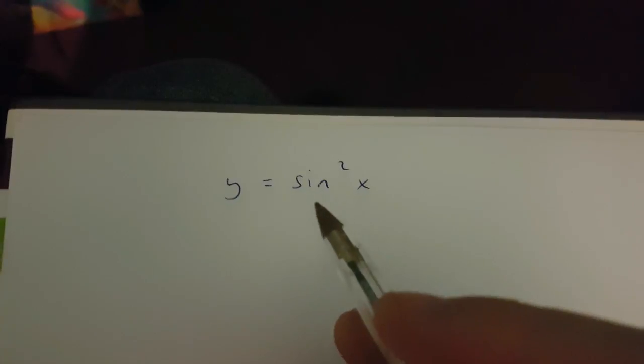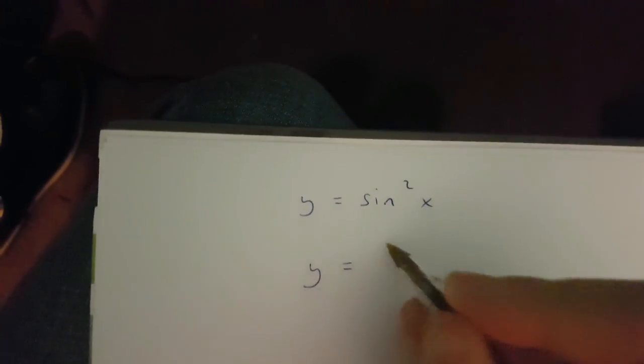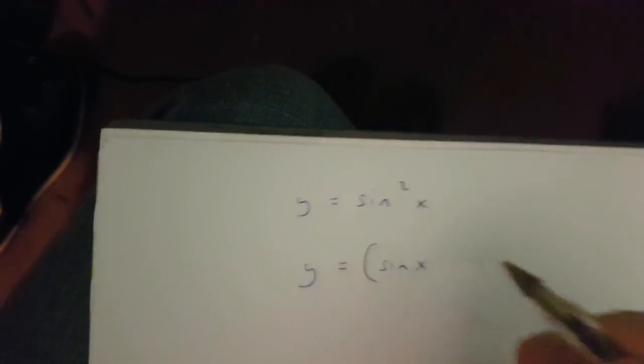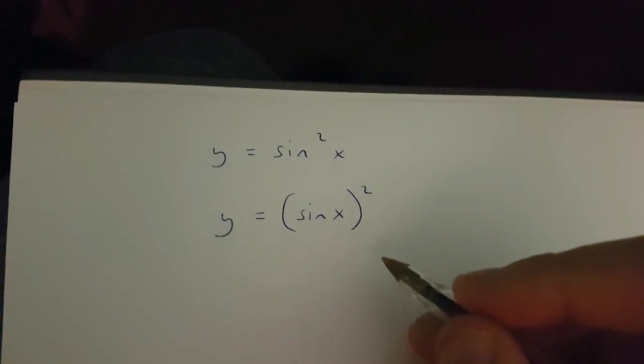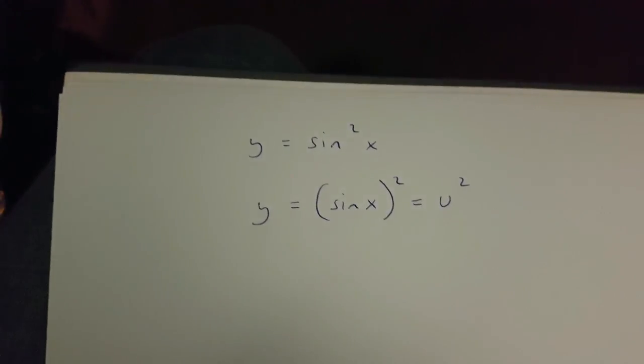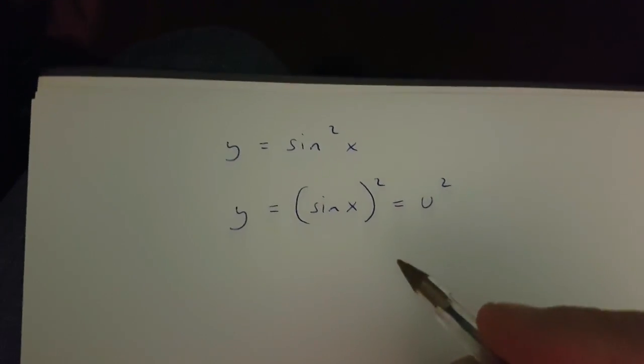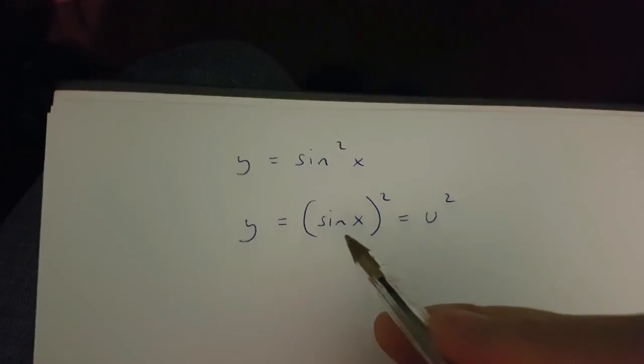Now firstly, let's transform this into y equals sin x in brackets squared. And then let's say that this is equal to u squared. If this is the case, then u is equal to sin x.